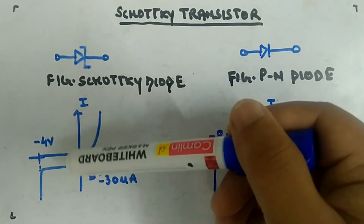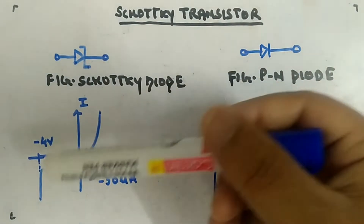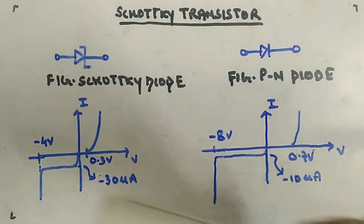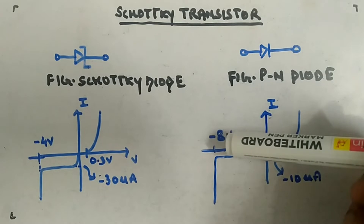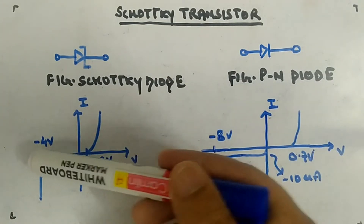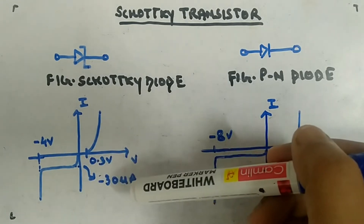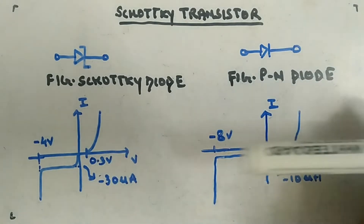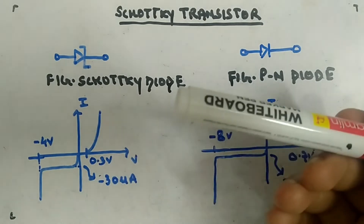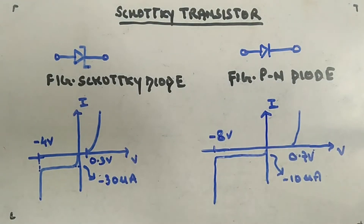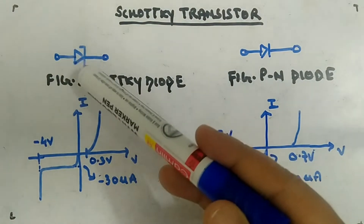On the negative side, the Schottky diode also has a low breakdown voltage — around minus 4 or 5 volts — whereas the normal PN diode has a breakdown voltage of around minus 8 volts. The Schottky diode also has more reverse leakage current, around minus 30 microamperes, compared to around minus 10 microamperes for the normal diode. We are not using this negative side; we are only interested in the fact that it provides low cut-in voltage, and how we can use this diode to make a Schottky transistor for use in Schottky TTL.